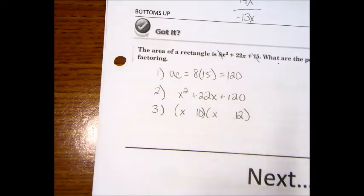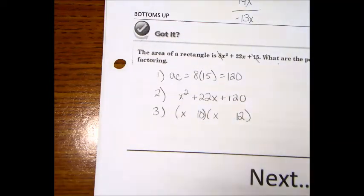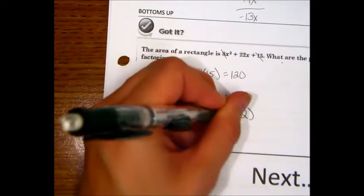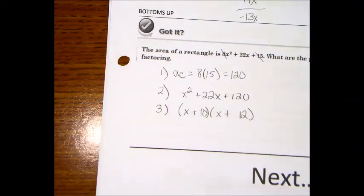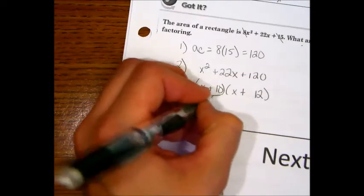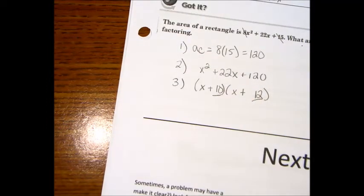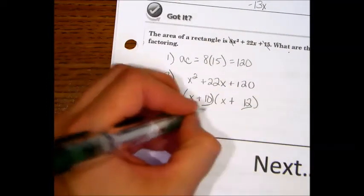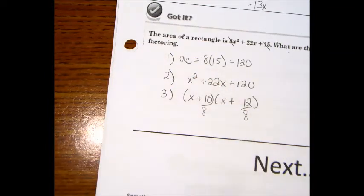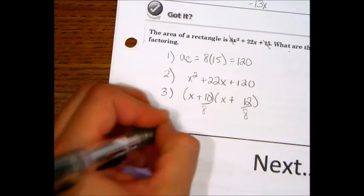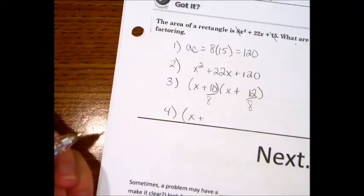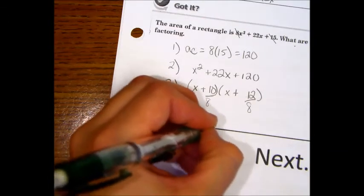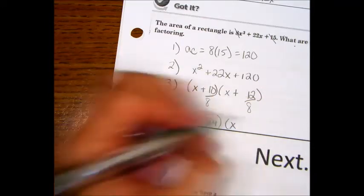So, we got our 120, we got our 22. And these are both positive, because we needed a positive 120, and we needed a positive 22. Now, the bottoms up does what? We have to put a bottom on there. What goes underneath our 10? What goes under our 12? A. Very good. Which is 8. So, the original A value, which was 8, goes underneath there. Now, we need to reduce those. Can you reduce those for me? That's going to be x plus 5 fourths. Perfect. And x plus 3 halves.